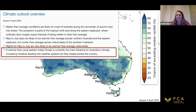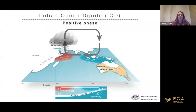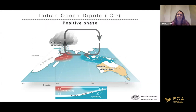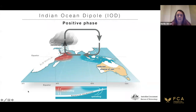As cold fronts travel across the country, they're drawing down air from the northwest of Australia. At the moment that air holds a lot of moisture, giving us an increased chance of rainfall. The Indian Ocean Dipole is a similar kind of climate process to the El Niño Southern Oscillation — which most people have heard of — but the El Niño operates in the Pacific Ocean, while the Indian Ocean Dipole operates in the tropical Indian Ocean.